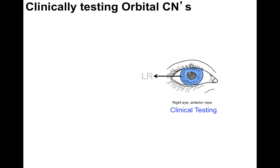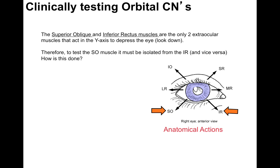So in clinical testing, first you have the patient look laterally and then look up — that's how you isolate the superior rectus away from the inferior oblique. To test the inferior oblique, you have the patient adduct their eye first and then look up, and that's how you isolate the inferior oblique away from the superior rectus.